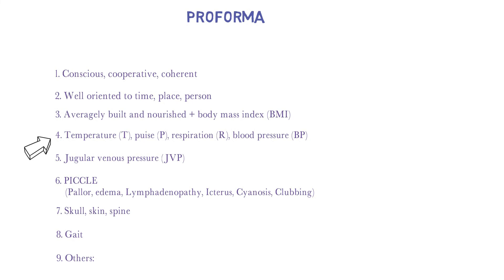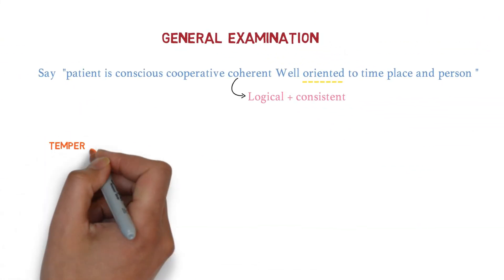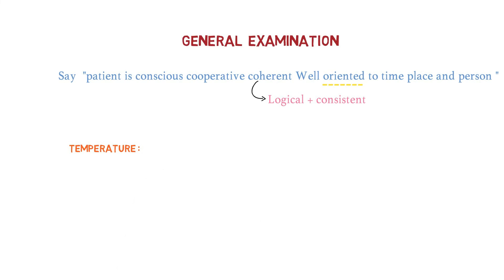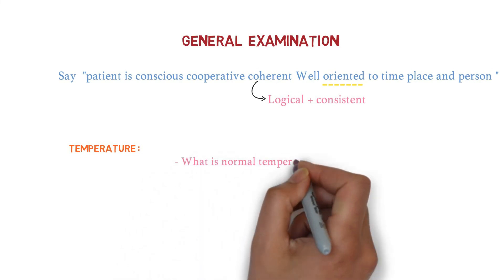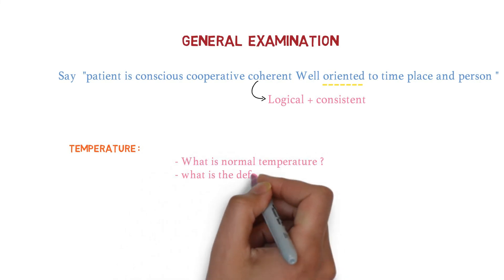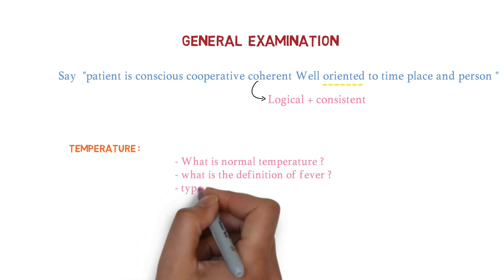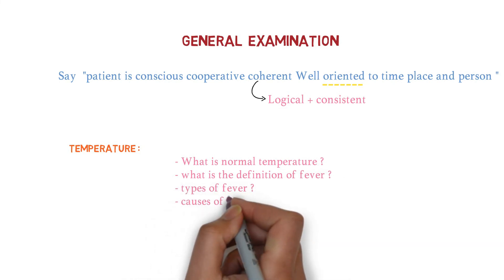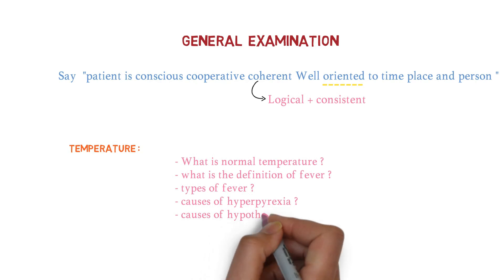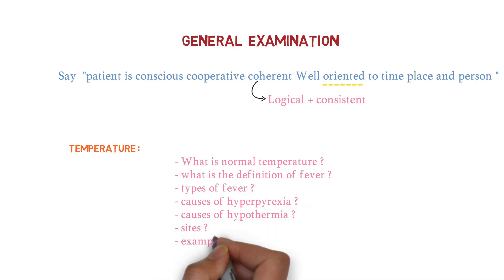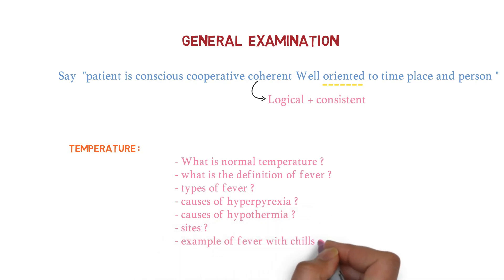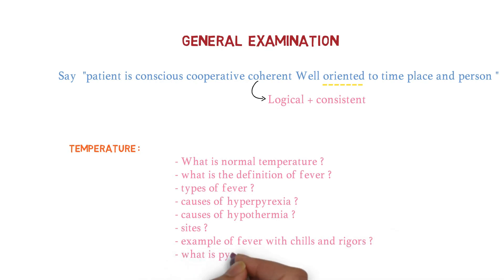Temperature, pulse, respiration, and blood pressure are topics of great interest for examiners. They may ask: what is normal temperature, what is the definition of fever, what are the types of fever, what are the causes of hyperpyrexia, what are the causes of hypothermia, from which sites can you measure temperature, examples of fever with chills and rigors, and what is pyrexia of unknown origin.